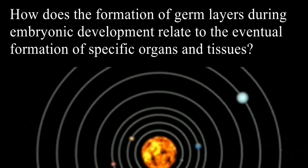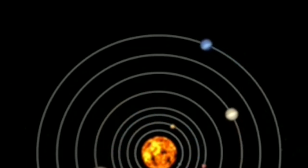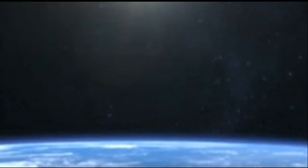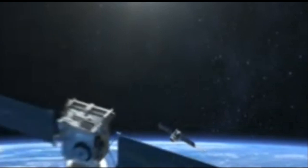How does the formation of germ layers during embryonic development relate to the eventual formation of specific organs and tissues? First, try to answer yourself. Pause the video, try to answer yourself, and after that listen to my answer. You have to answer in that way: There are three germ layers such as the ectoderm, mesoderm, and endoderm. They give rise to specific organs and tissues through a process called differentiation, and the cells in each germ layer specialize into different types of cells and form the structures and tissues of the body.